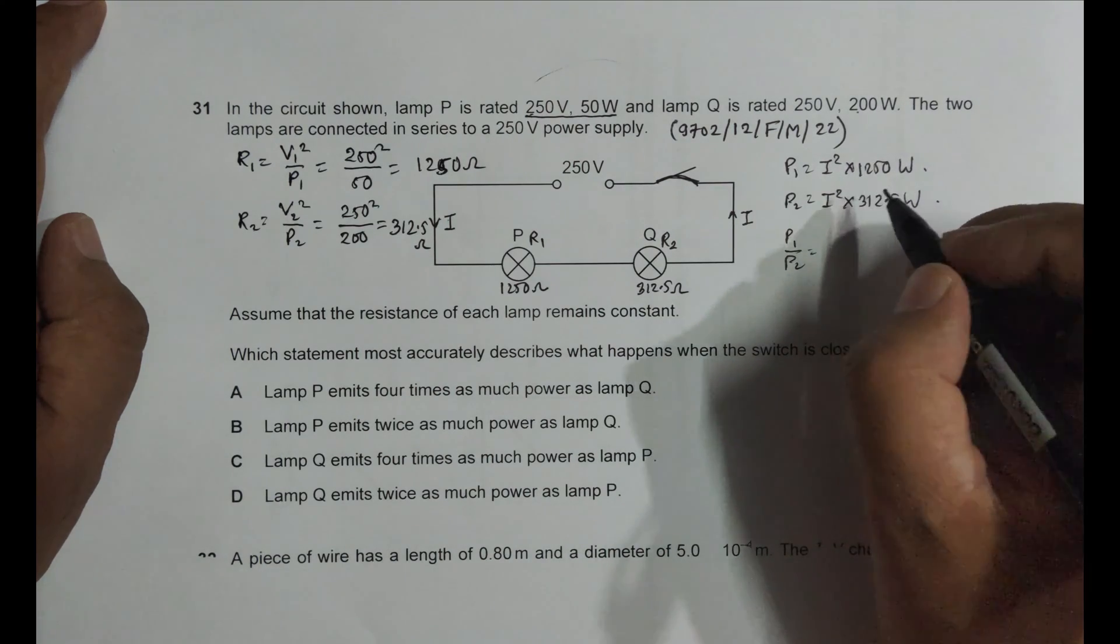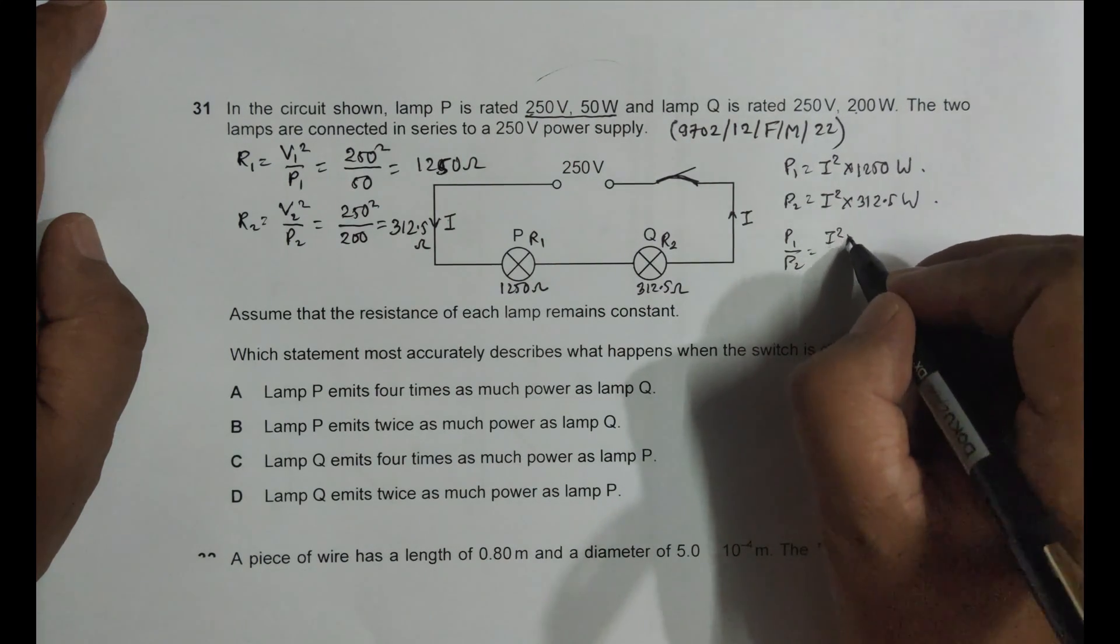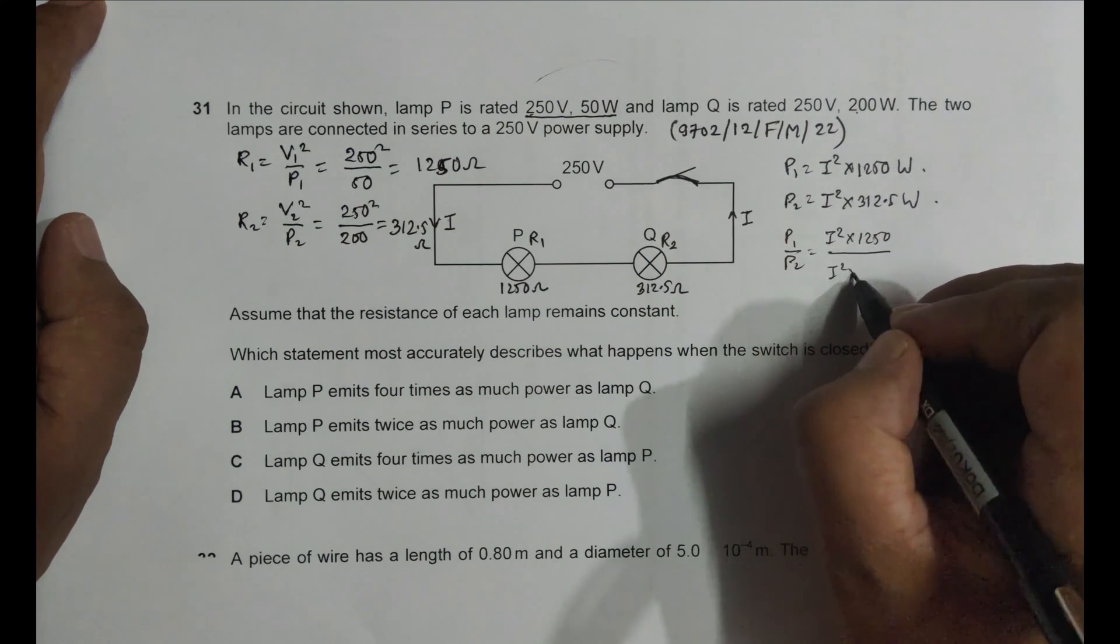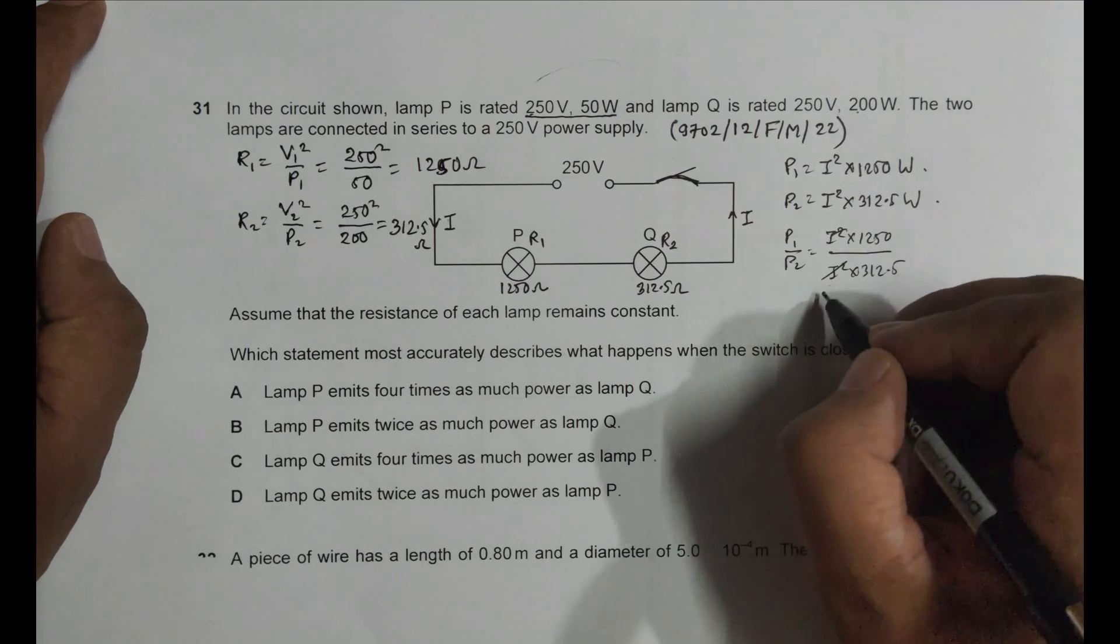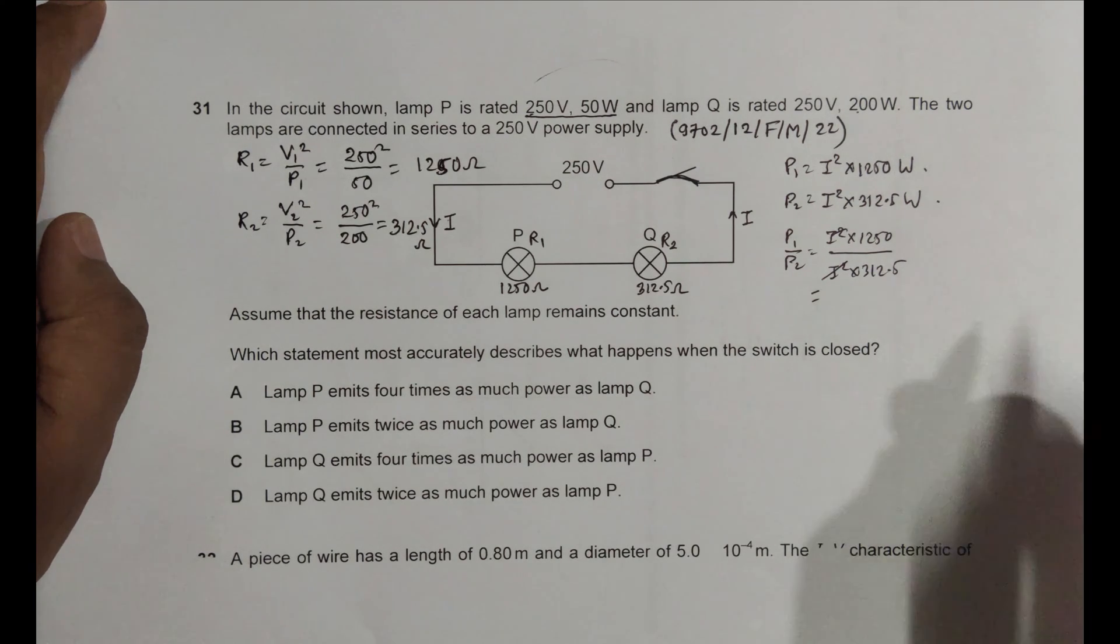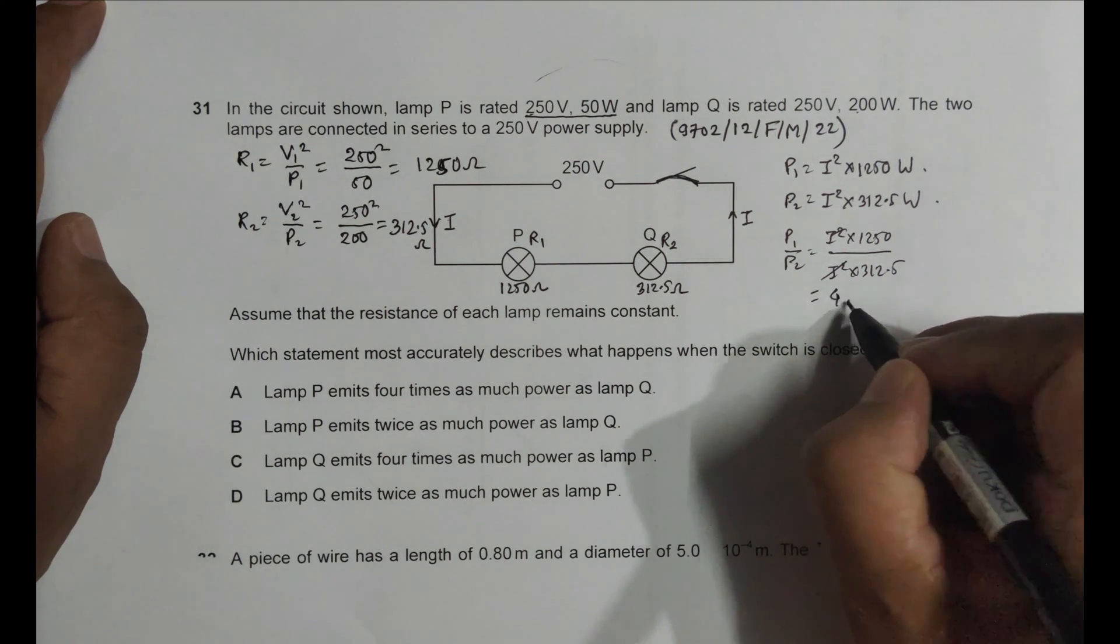So this gives us power 1 by power 2 is equal to this by this, so it should be I squared into 1250 by I squared into 312.5. This cancels and it gives us 1250 divided by 312.5 equals 4.